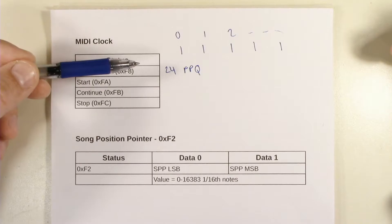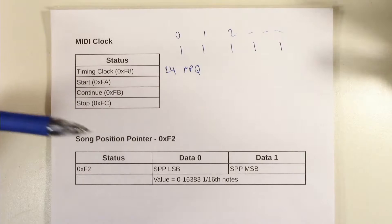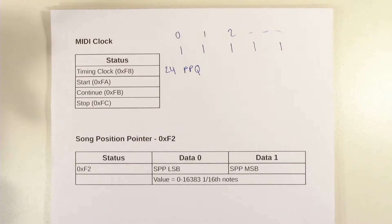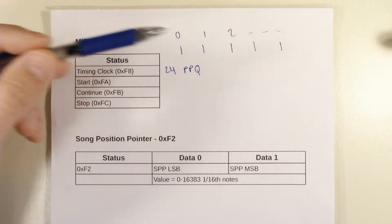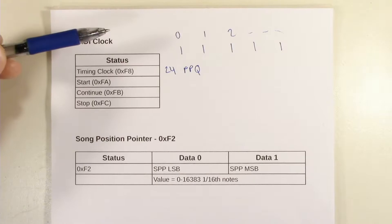So what has to happen is when this gets sent from a device, maybe the device internally is working at 96 PPQ or even a higher number like 480 PPQ, that's a commonly used number. Software uses even bigger numbers because it doesn't really make any difference. But when you send it over the wire it definitely makes a difference because you can't just send unlimited numbers of pulses per second or per quarter or whatever because that will just saturate the MIDI connection and that would be bad.